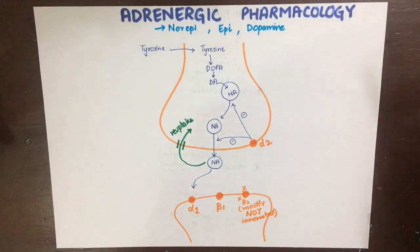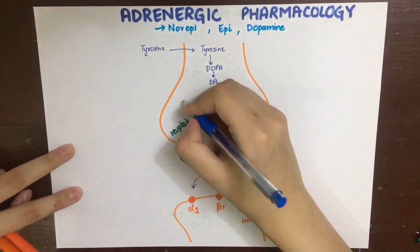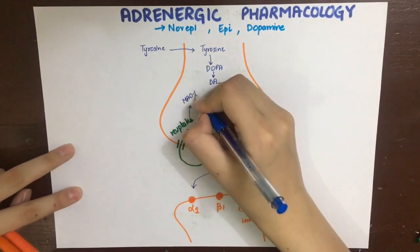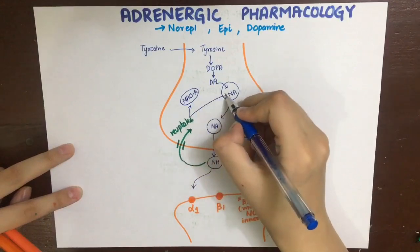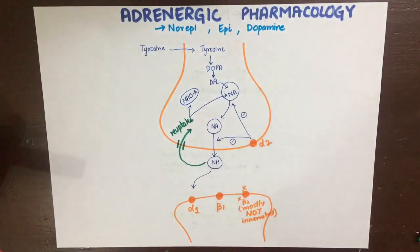Excess norepinephrine, or norepinephrine that has performed its function, is taken back up into the nerve terminal. There it is either metabolized by the enzyme monoamine oxidase A (MAO-A), or re-uptaken into the storage vesicles.